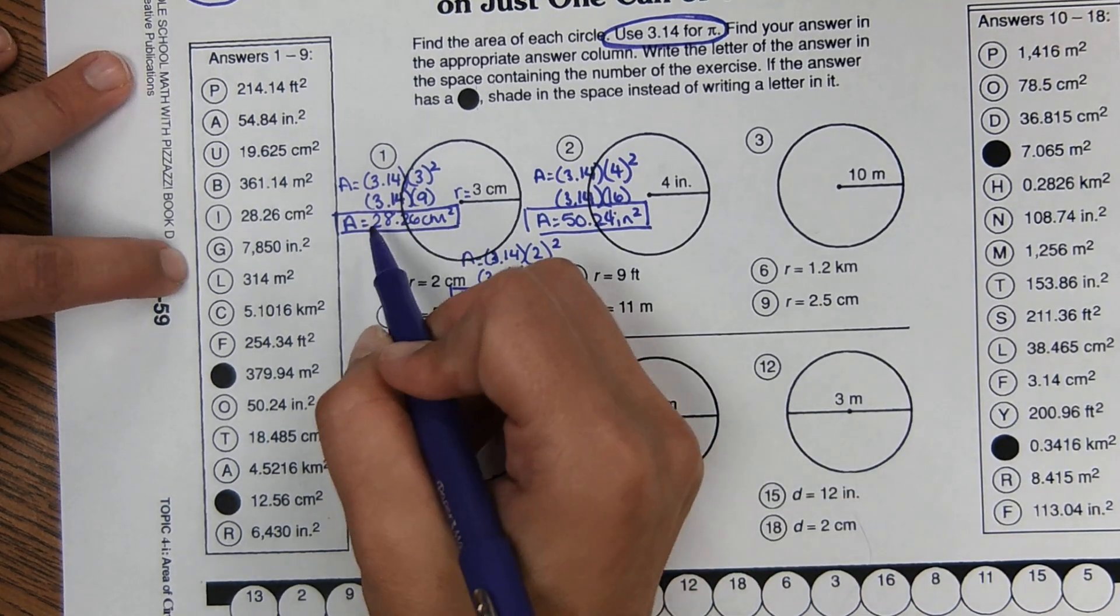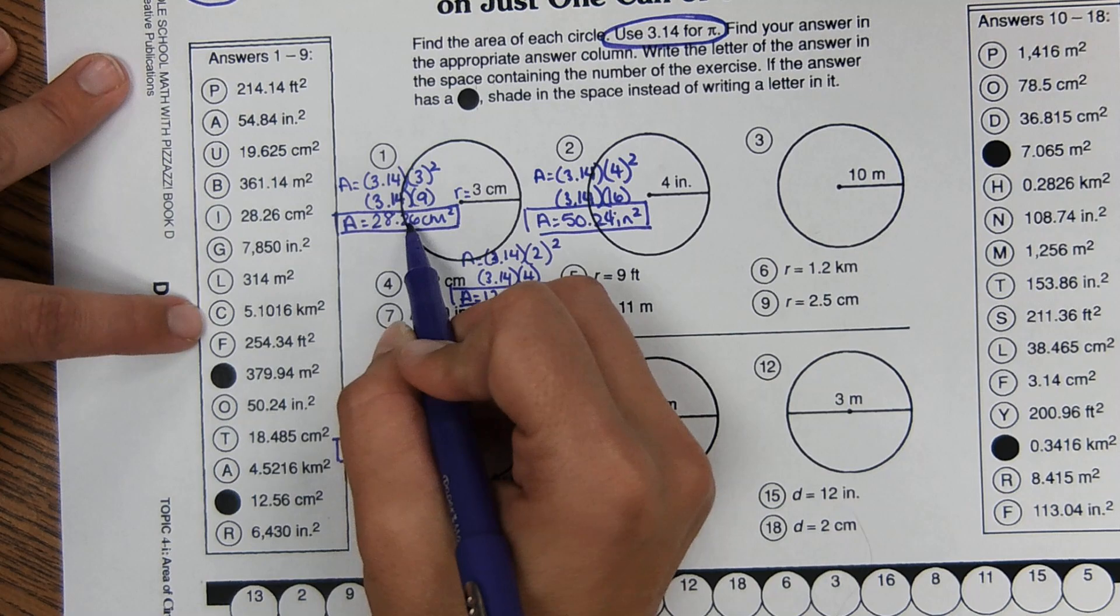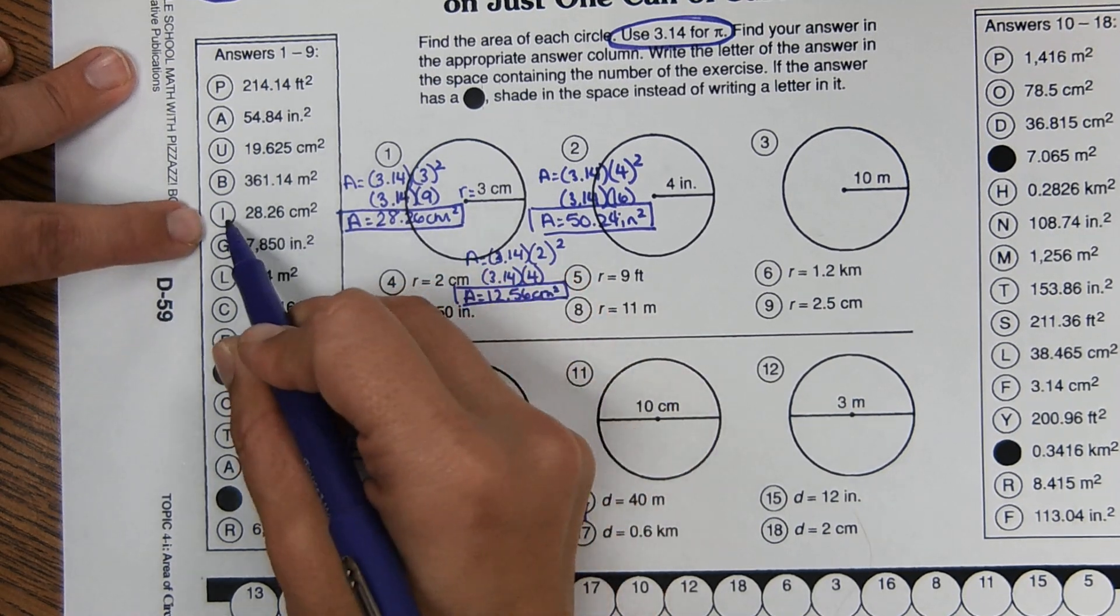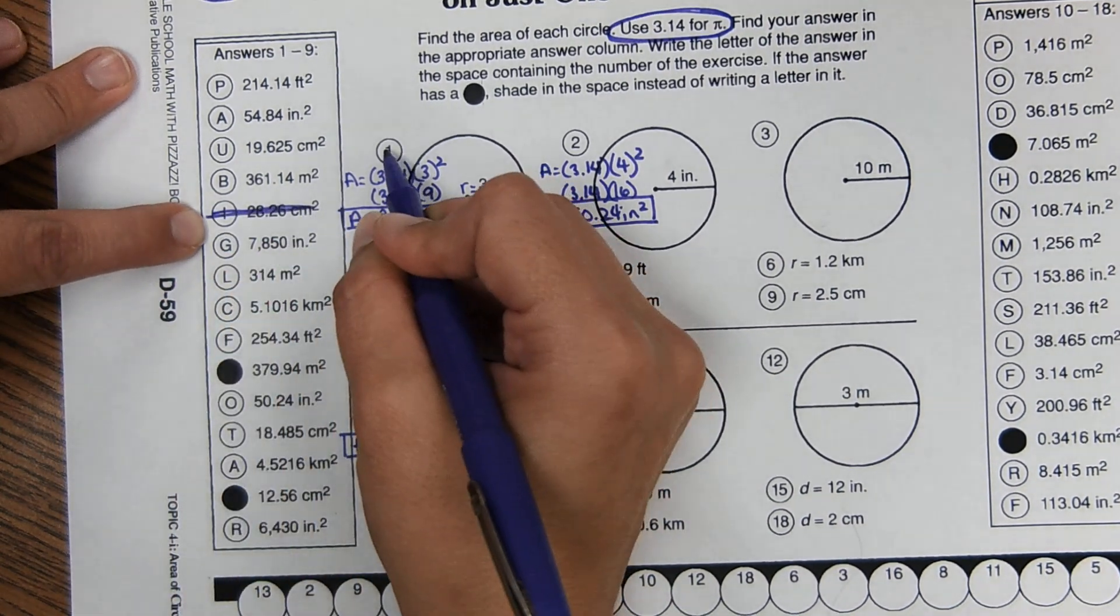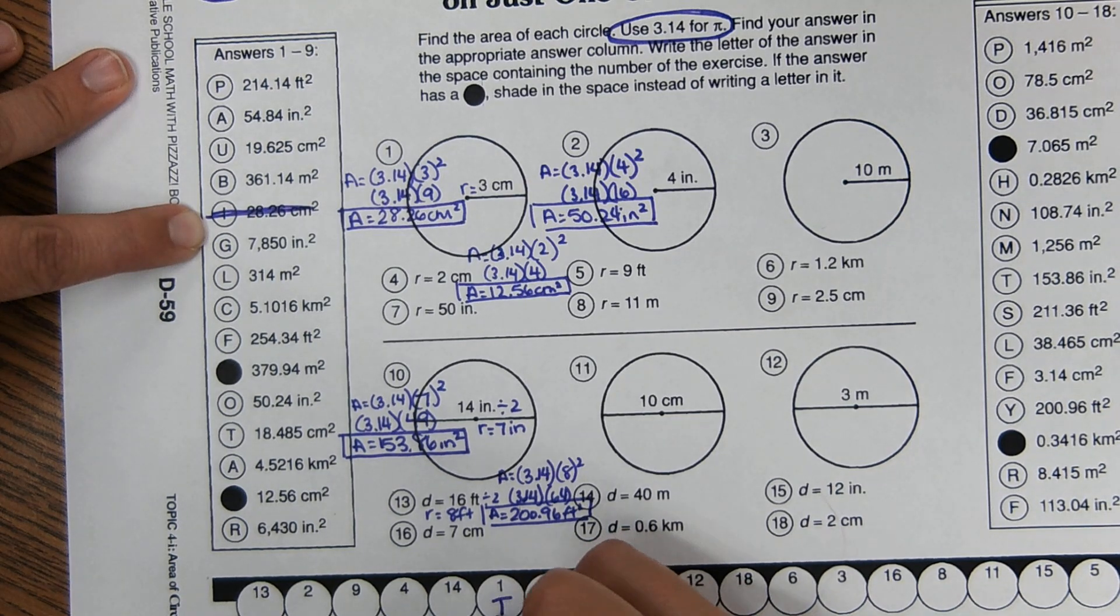And so what you do is as you get a correct answer. So this one said 28.26. I'm looking for it over here. It is I. So one I and I just put an I down here.